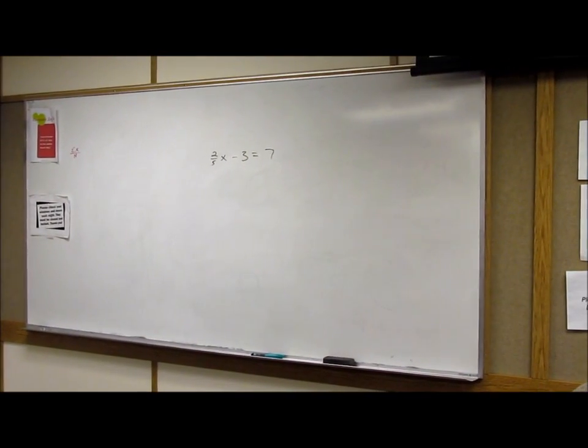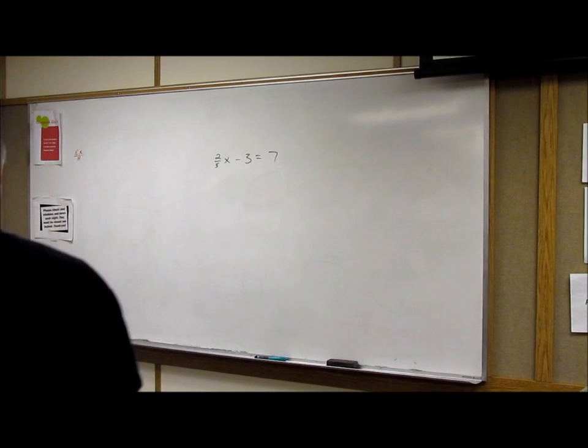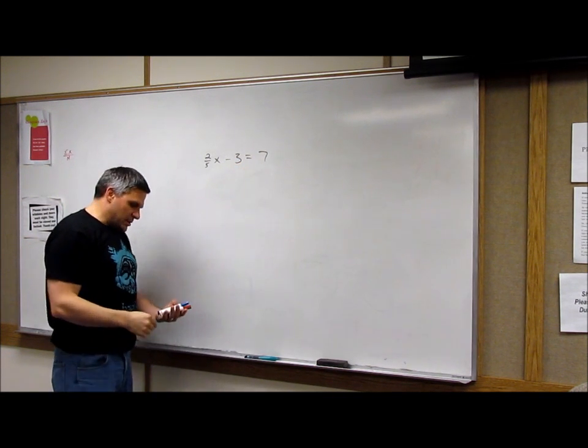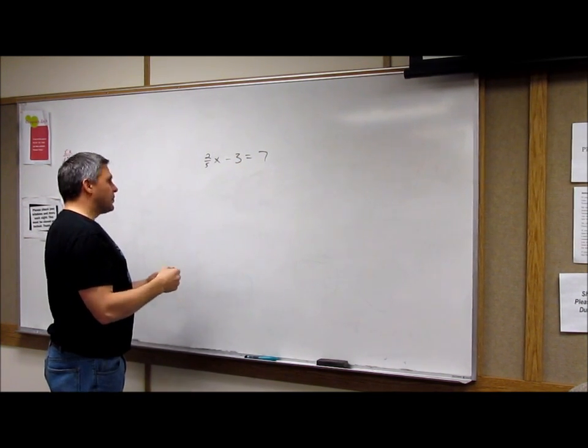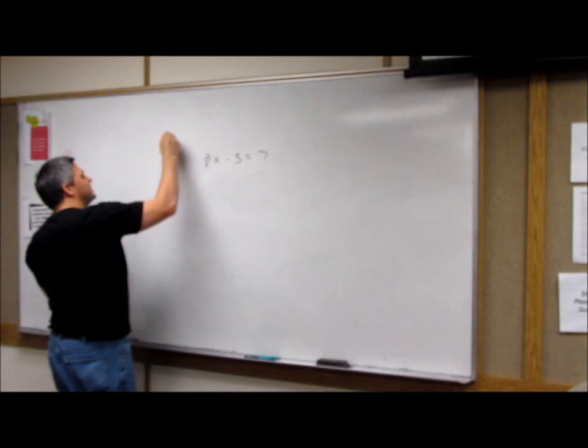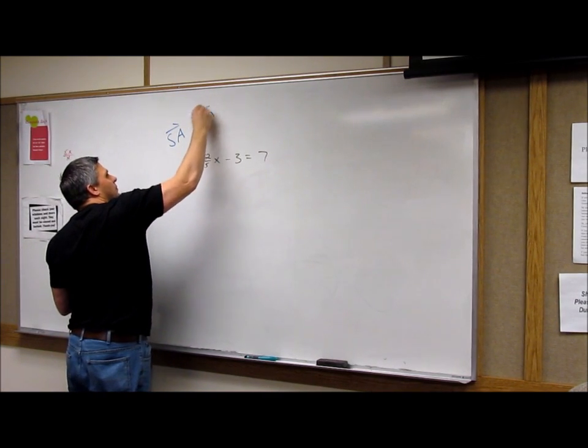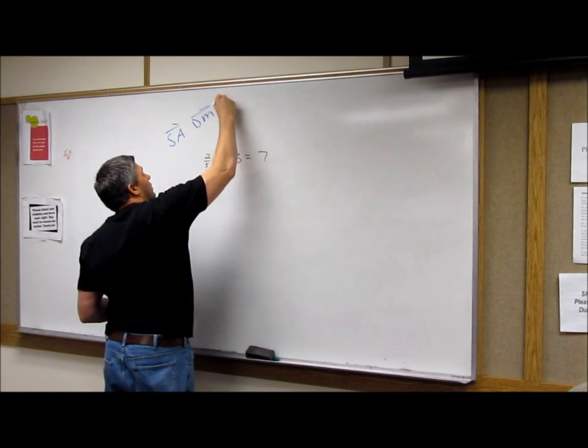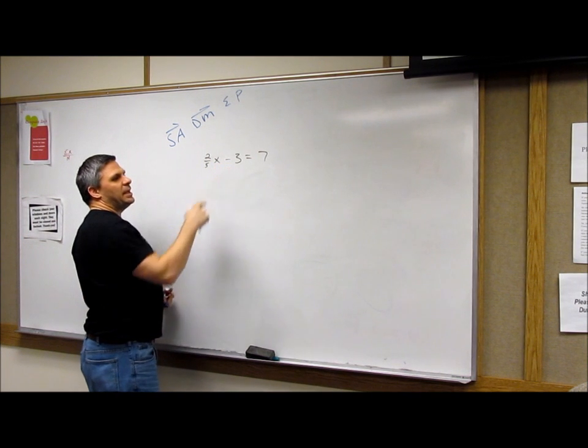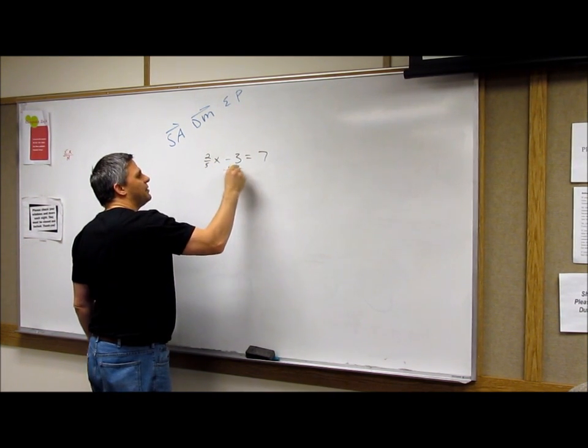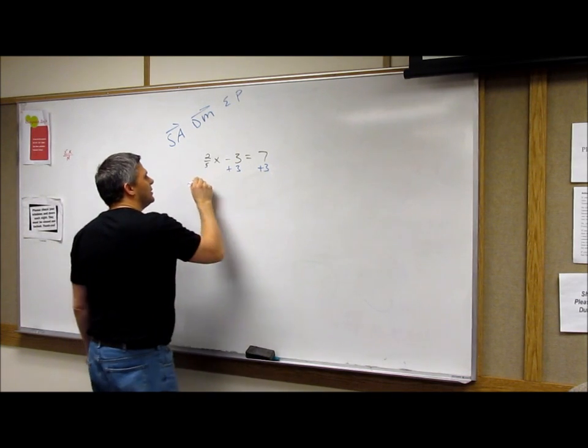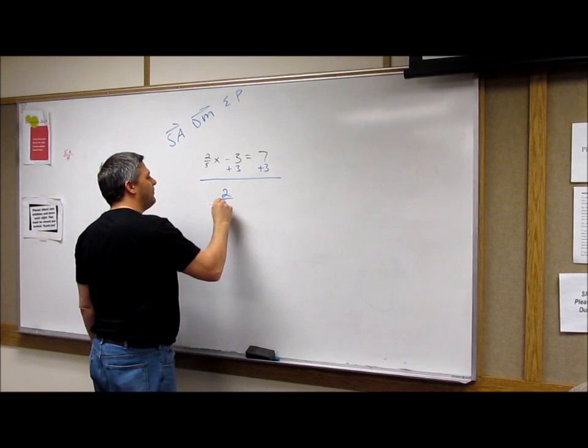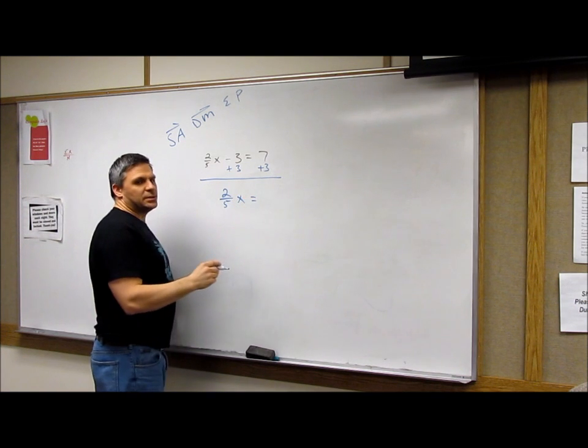And then I come over here to another one. It's a little bit more difficult. This one's got 2 fifths X minus 3 equals 7. So I get 2 fifths X. So I still start the same way. It's still SADMEP. I still start with subtraction and addition. Whatever's being added or subtracted, I do the opposite. So I'm going to add 3, add 3. And I get, in this case, I get 2 fifths X equals 10.